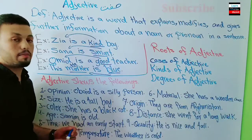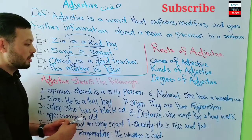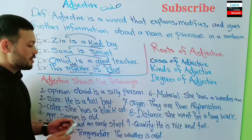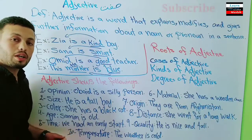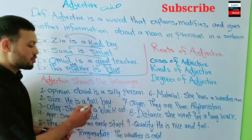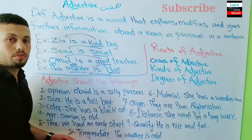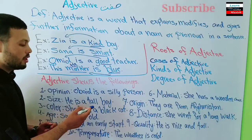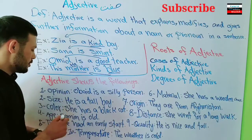Adjectives also show size — 'Andaza' in Dari. For example: 'He is a tall boy.' Here 'tall' is the adjective showing the size of the boy. So when we say a boy is tall, 'tall' indicates the size — it is a size adjective.